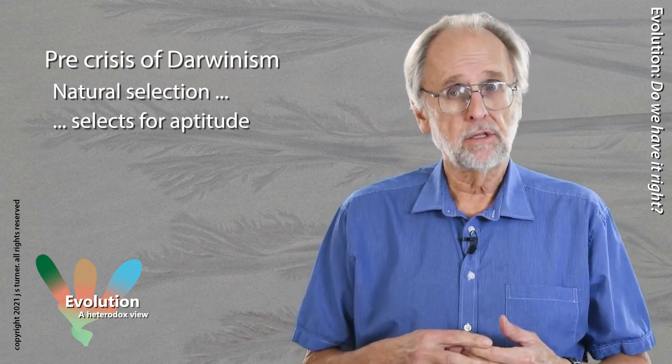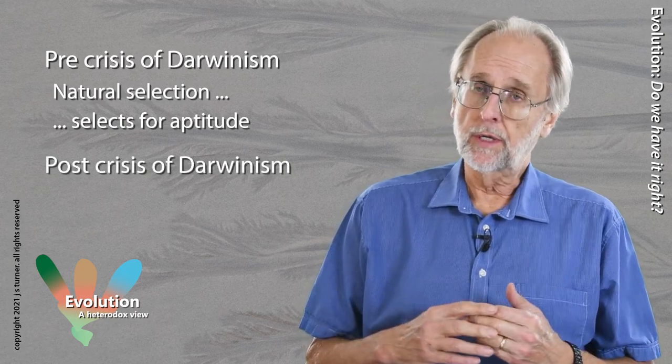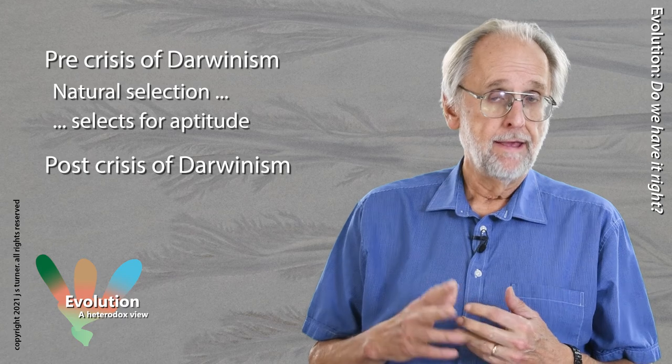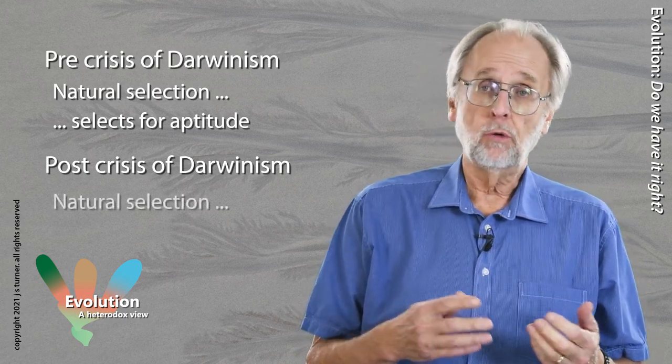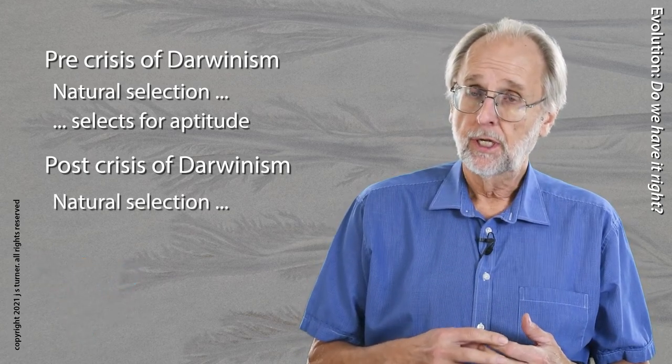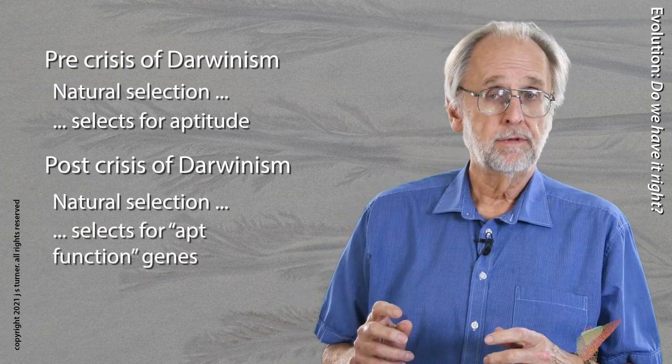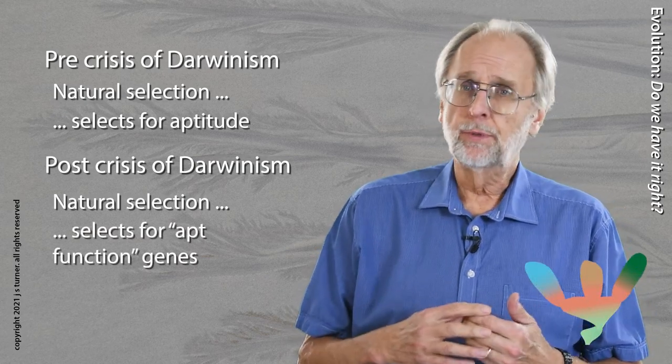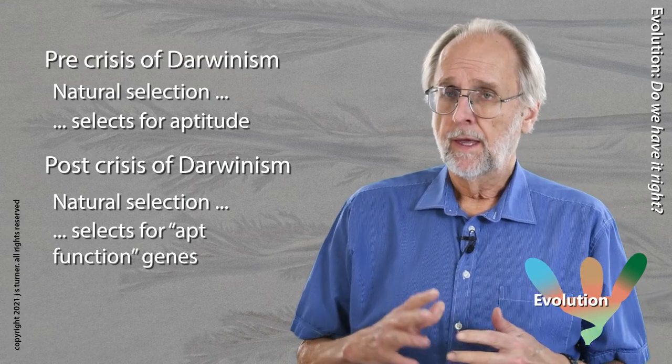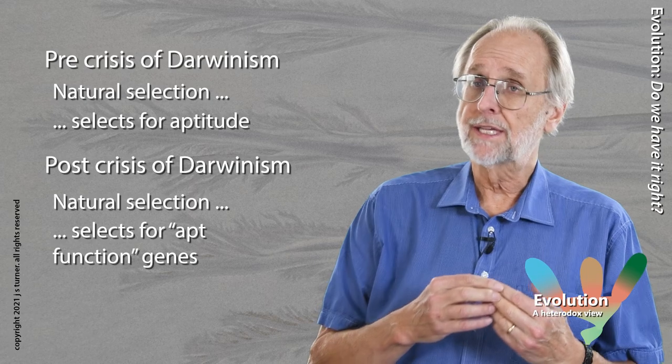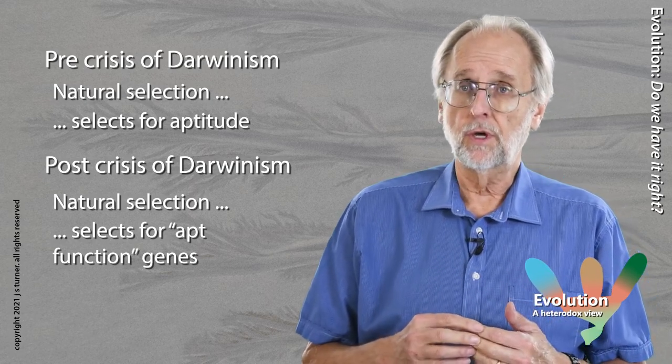In the aftermath of the crisis of Darwinism, the new Darwinism that emerged was a form of gene selection. Now, adaptation was no longer tied to apt function, but became the selection of apt function genes. For the time, this was a brilliant intellectual achievement, and it cemented into place the modern conception of Darwinism as gene selection, where it still dominates.